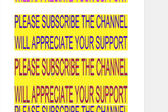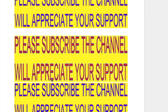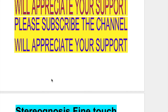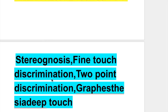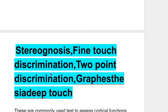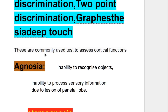In the other video, we discussed the somatosensory cortex function testing. In this video, we'll discuss stereognosis, fine-touch discrimination, two-point discrimination, graphesthesia, and deep touch. These are commonly used tests to assess cortical function.